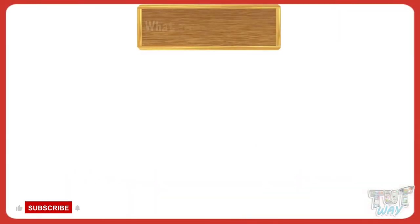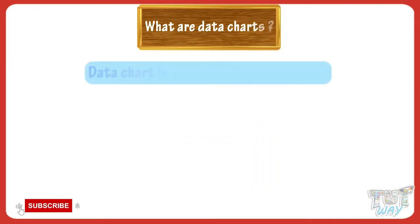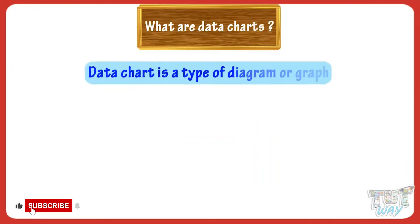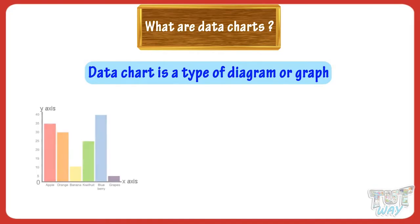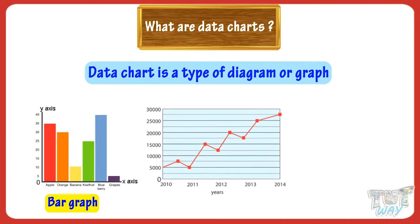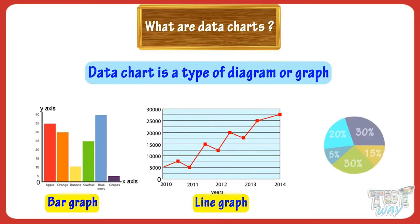A data chart is a type of diagram or graph where data is represented by various symbols such as bars in a bar graph, lines in a line graph, or slices in a pie chart.